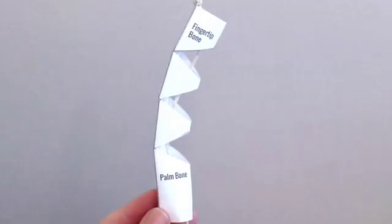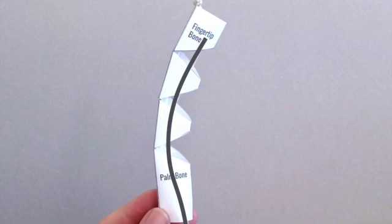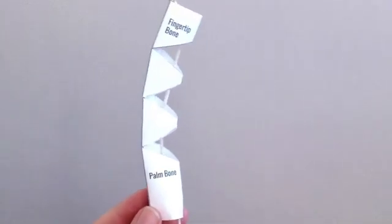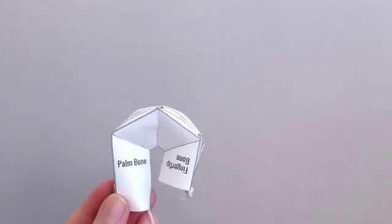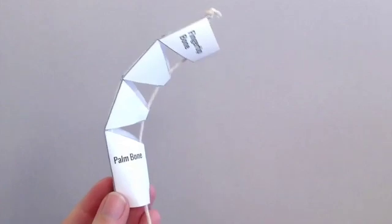Notice there's also a string that runs all the way through the finger connecting the paper bones. That string is just like the tendons in your real hand. When the string is pulled the paper bones bend moving the finger. Here's how you can make one step by step.